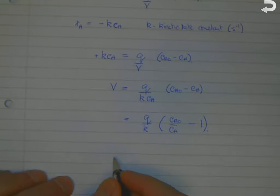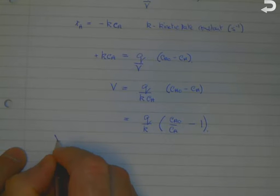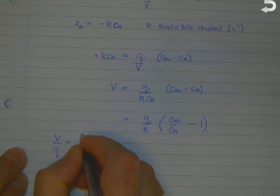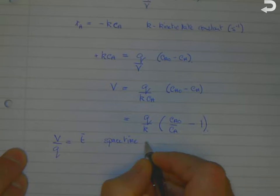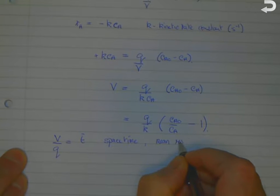You can define a new parameter V/Q, which is equal to τ (tau bar), which is called the space time, or commonly referred to as the residence time, more correctly the mean residence time.